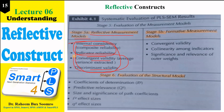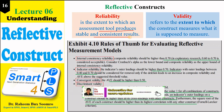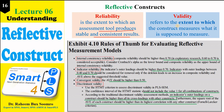Composite reliability and Cronbach's alpha assess the reliability of the construct, while convergent validity and discriminant validity assess the validity of the construct. Reliability is the extent to which an assessment tool produces stable and consistent results whenever it is utilized. Validity is the extent to which the construct measures what it is supposed to measure. These are the two core concepts of reliability and validity.